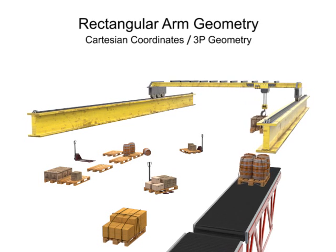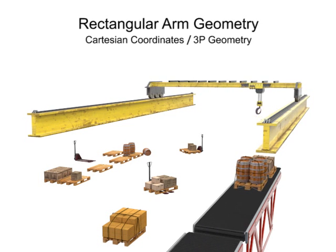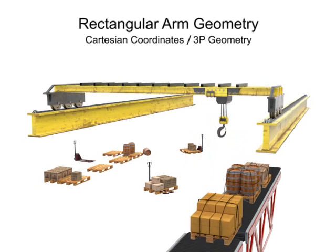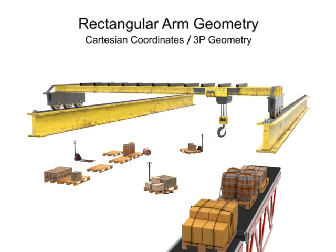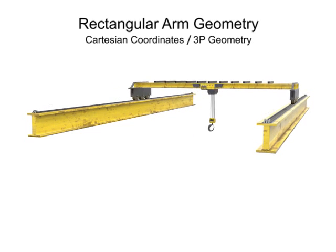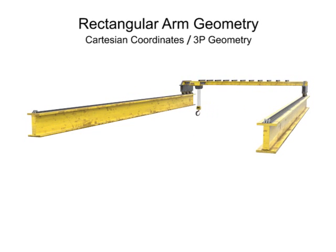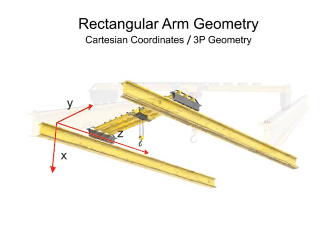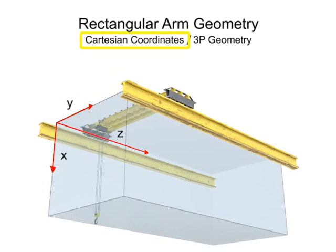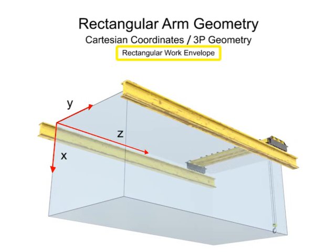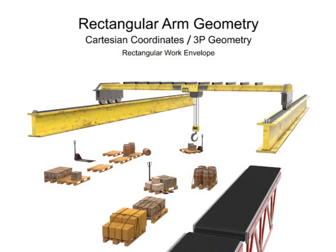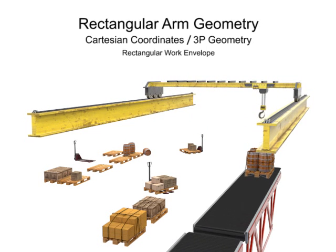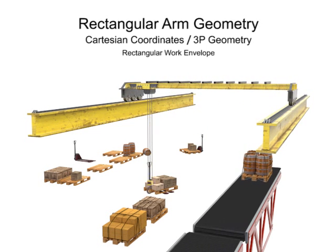Rectangular arm geometry robots can only move linearly in each direction. An overhead crane robot is a good example of this type of motion — it can move forward and backward, left and right, and up and down. Robotic arms that use Cartesian coordinate geometry generate a rectangular work envelope, and have the simplest geometry and control system, typically used in material handling operations.